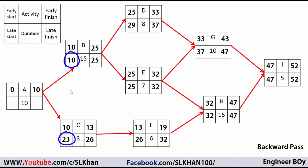Finally for Activity A, we look at the late start of B and C — 10 and 23. We take the minimum, which is 10, as the late finish of Activity A. Subtracting duration 10: 10 minus 10 equals zero, so the late start of Activity A is zero.